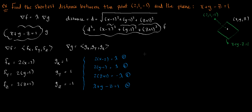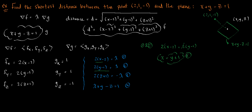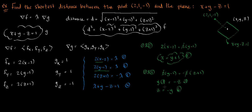By looking at equations 1 and 2, we see that lambda equals the same expression in both, so 2 times (x minus 2) equals 2 times (y minus 1). Dividing both sides by 2, we get x equals y plus 1. We call this equation 5. Then by looking at equations 2 and 3, we get 2 times (y minus 1) equals negative 2 times (z plus 1), which simplifies to z equals negative y. This is equation 6.